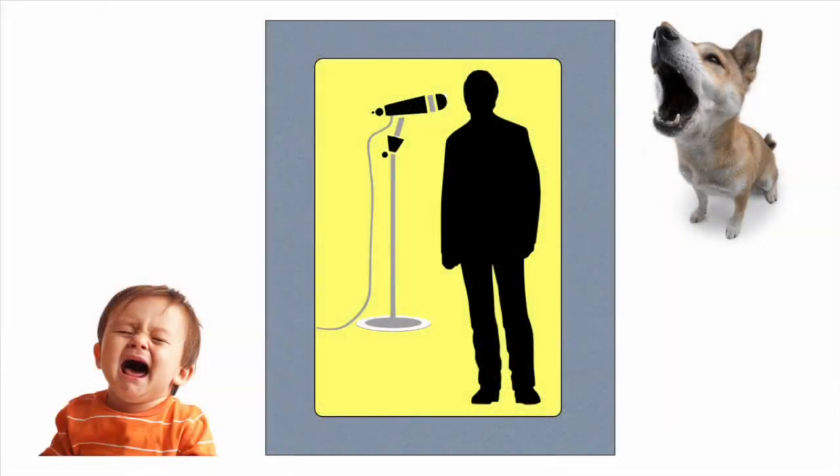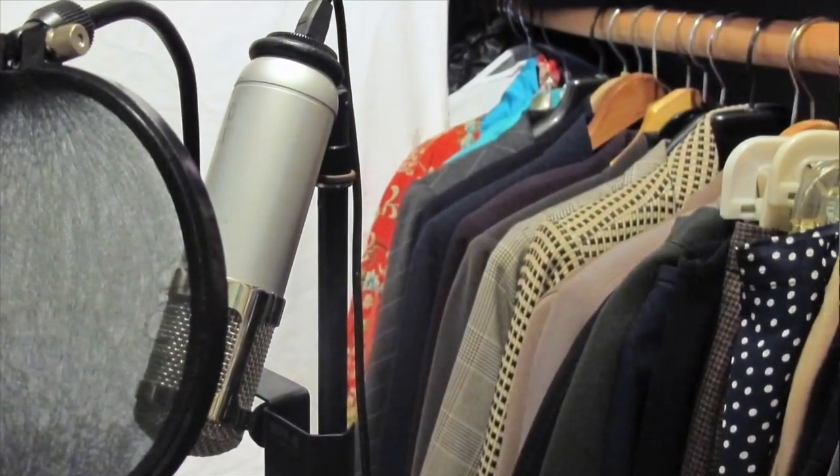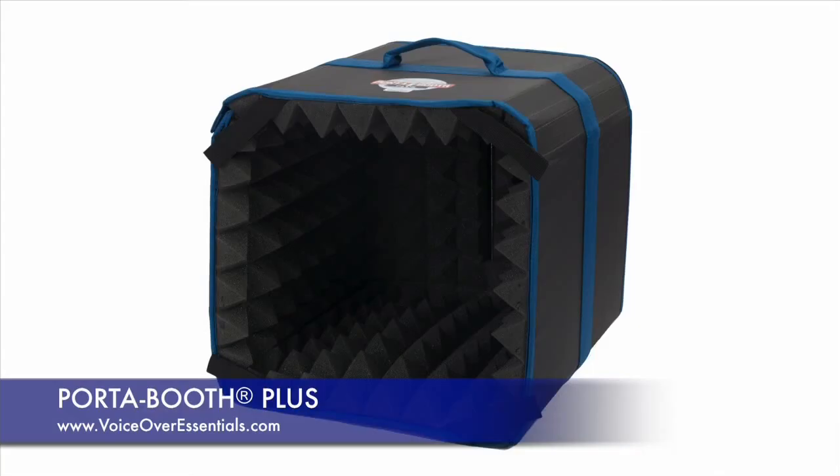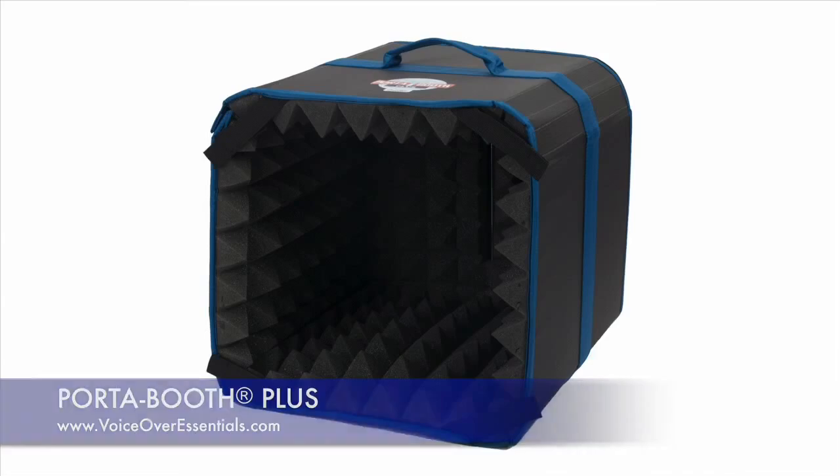When recording at home, there are some less expensive options for improving the recording environment. A walk-in closet, for example, provides a small space with lots of absorption from all the hanging clothes. Some people have found that isolating the mic in an acoustic box or using a three-panel screen with acoustic foam on it works well. Noises in the room have frequencies too — for example, the hum of your air conditioner is a low-end frequency.